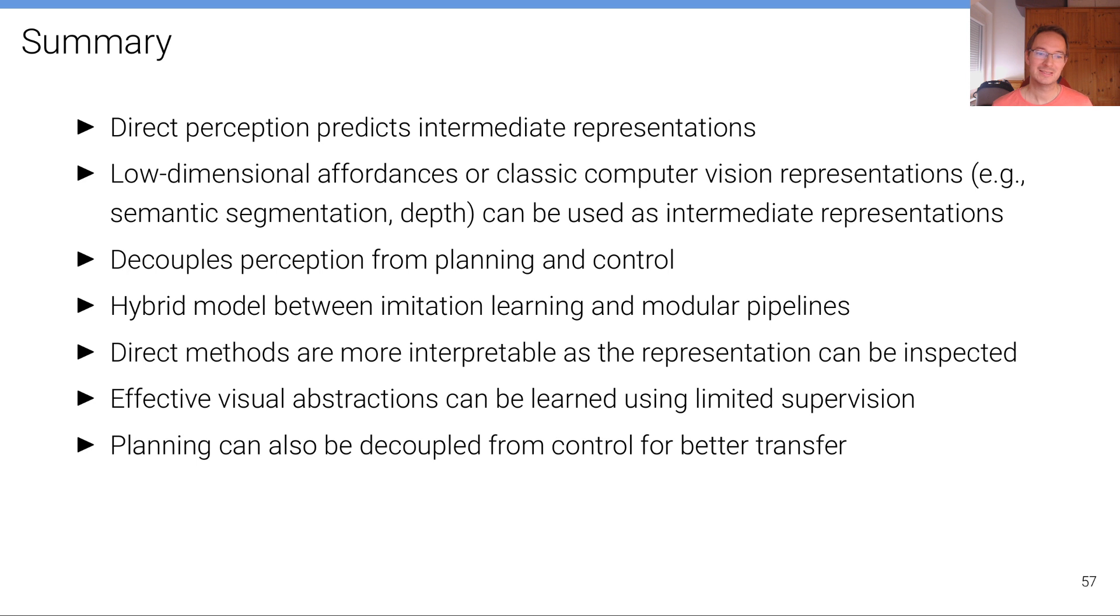We've also seen that planning can be decoupled from the control itself for better policy transfer, for example to new cars or from simulation to the real world. And we've also seen that offline metrics are not necessarily indicative of online driving performance. So you need to be careful when interpreting offline metrics.